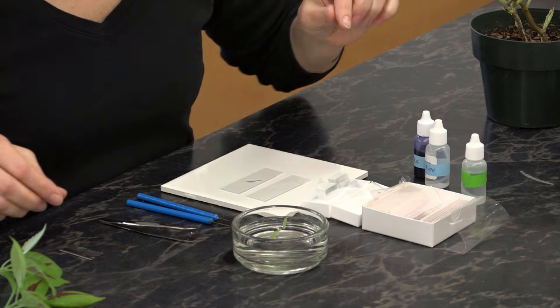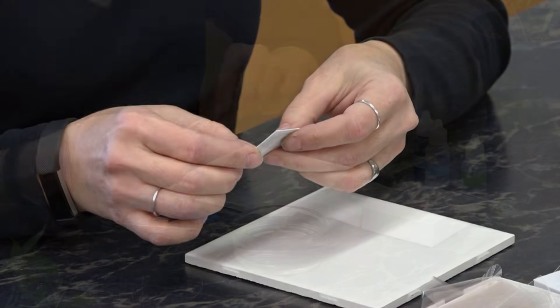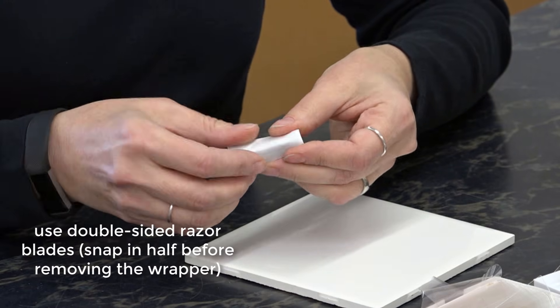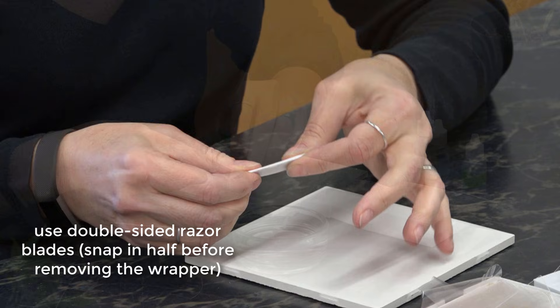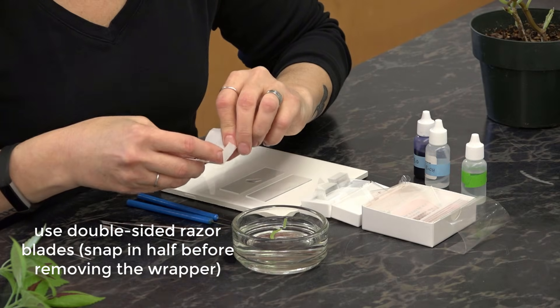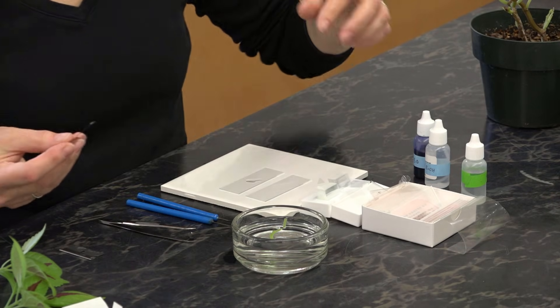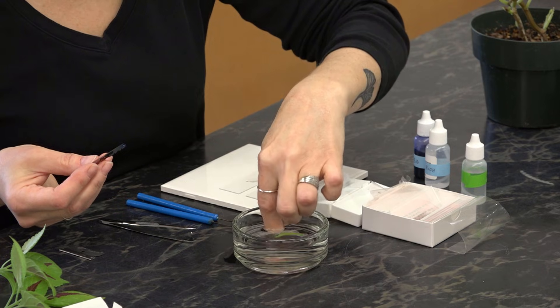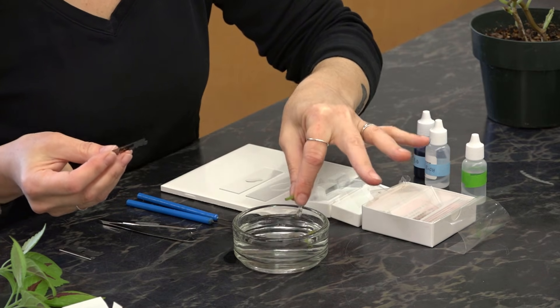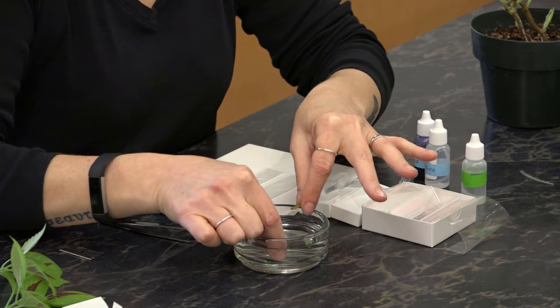To make the hand sections, we want to use a fresh blade. You're going to want your plant material moistened and you're going to want your blade moistened.